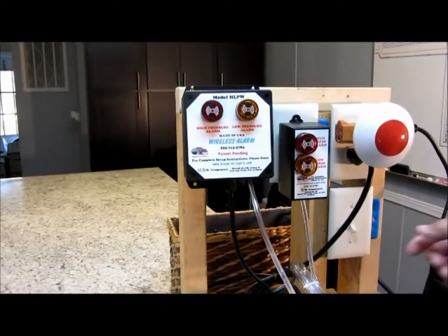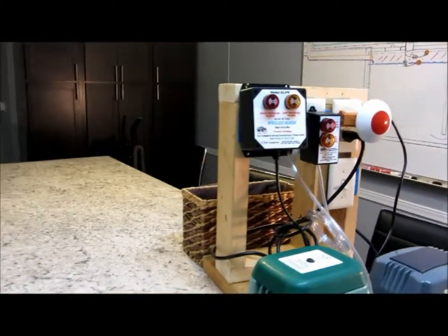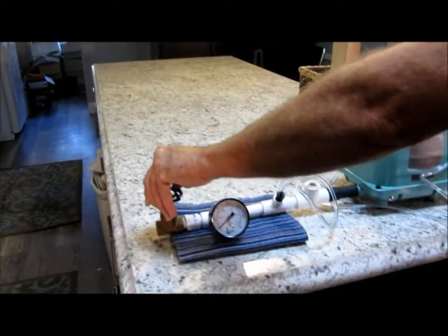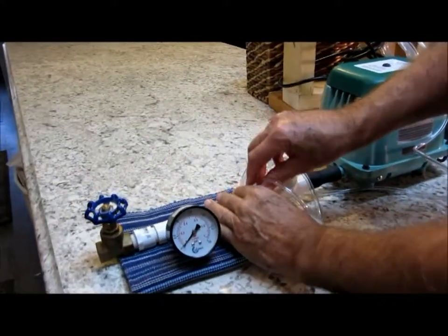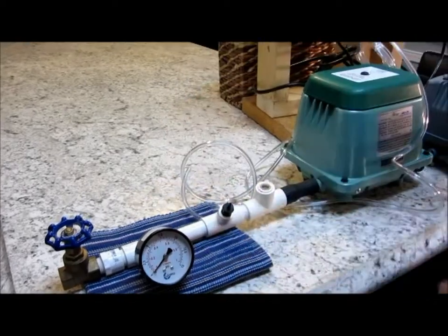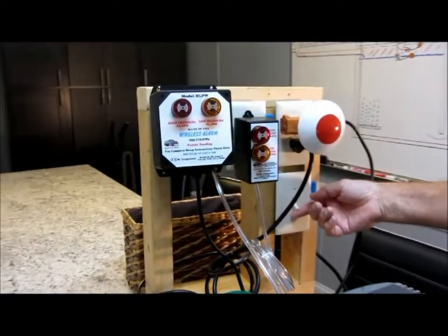When you actually receive your alarm for the first time, the simple test is to just plug it in without hooking up the vinyl tubing. Since there will be no air pressure, your alarm siren will activate just like this.